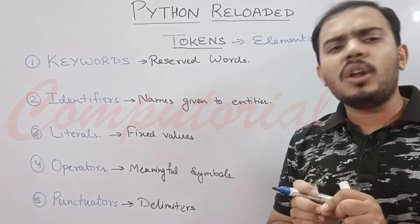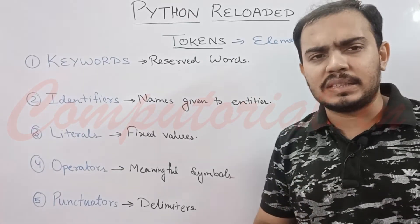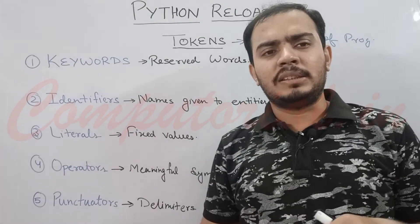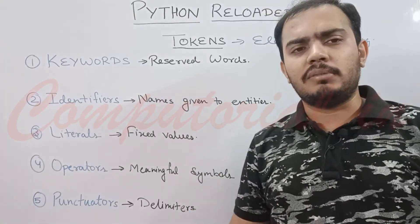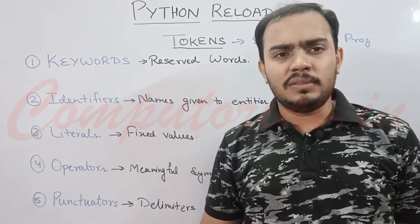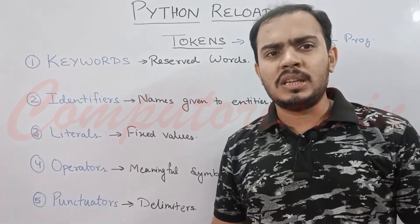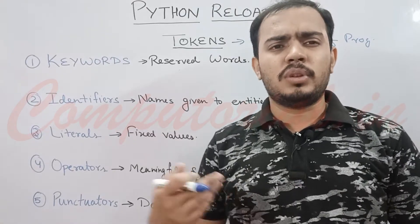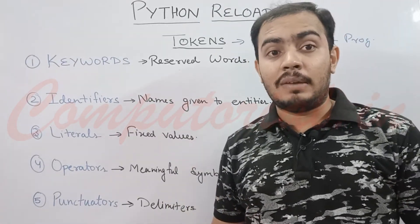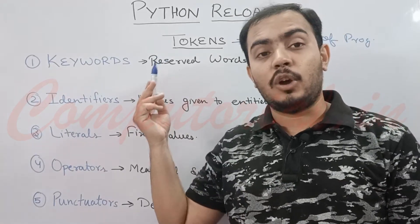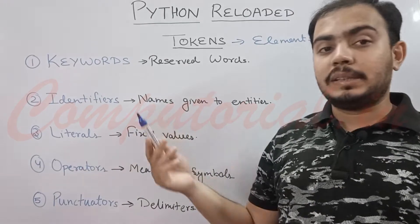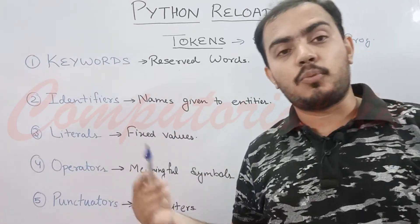These words are already available and defined inside Python's character set. In every version of Python, there are different numbers of keywords. For example, in Python 3.6 there were 33 keywords, and in Python 3.8 there were 40 keywords. So the number of keywords changes with the Python version. In the next video, I will also show you how many keywords we have in Python 3.10 or 3.11.